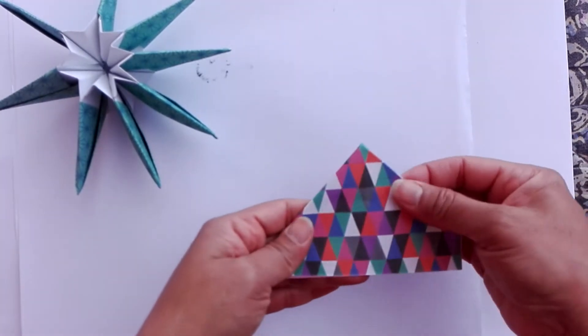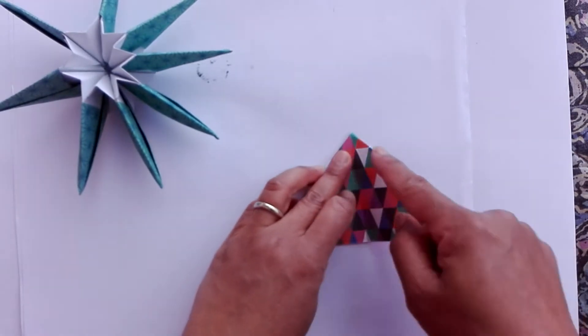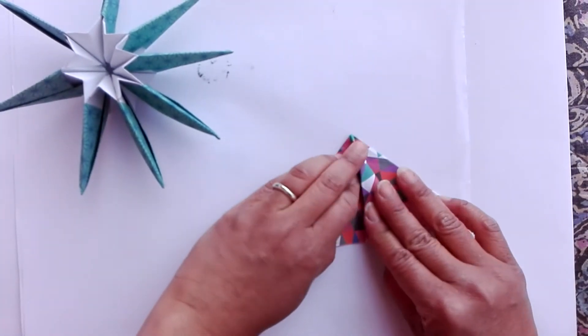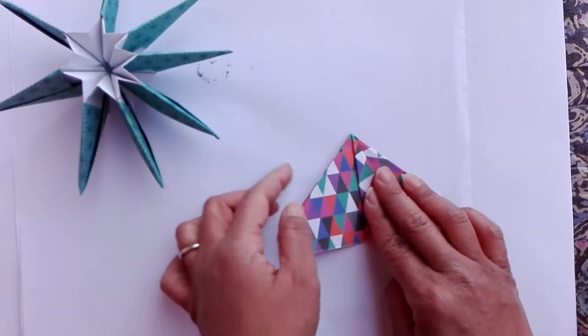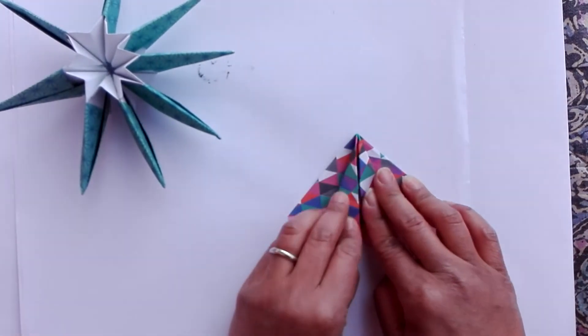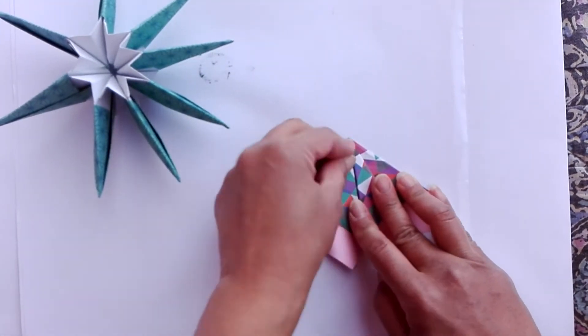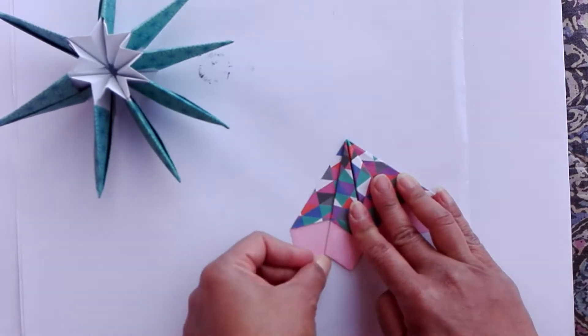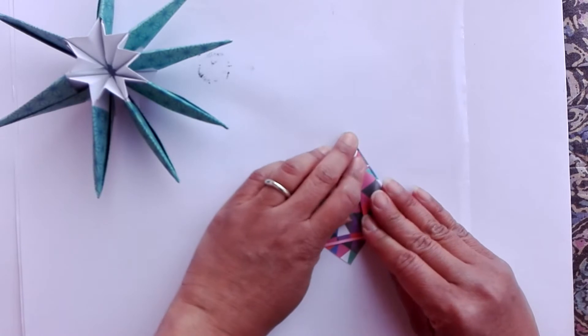Now we want to use the clear side this way, and bring this side to the center, and also this side. Flip the paper and do the same here.